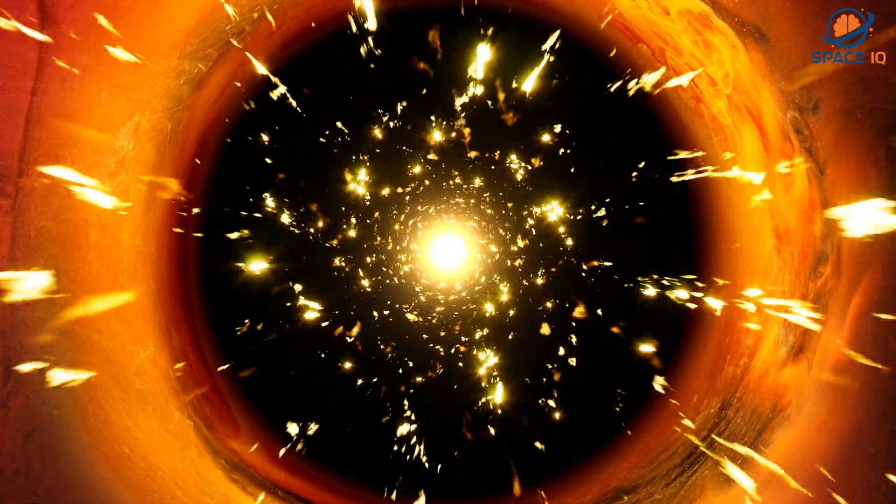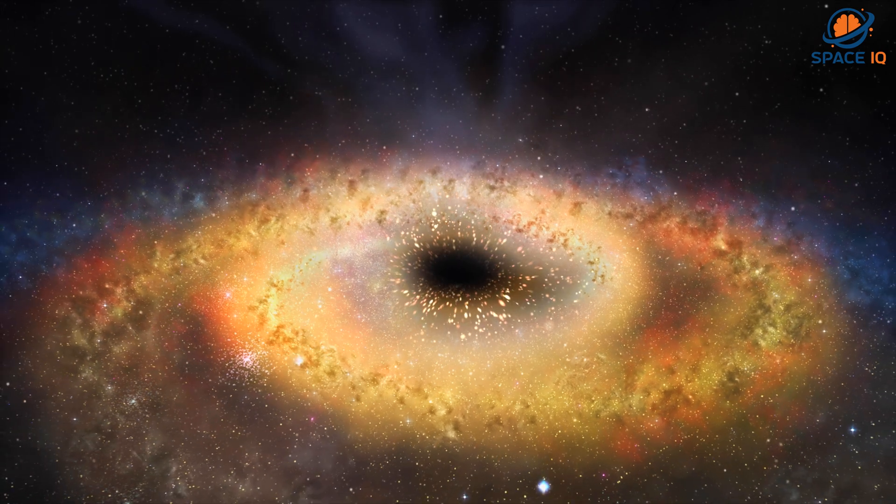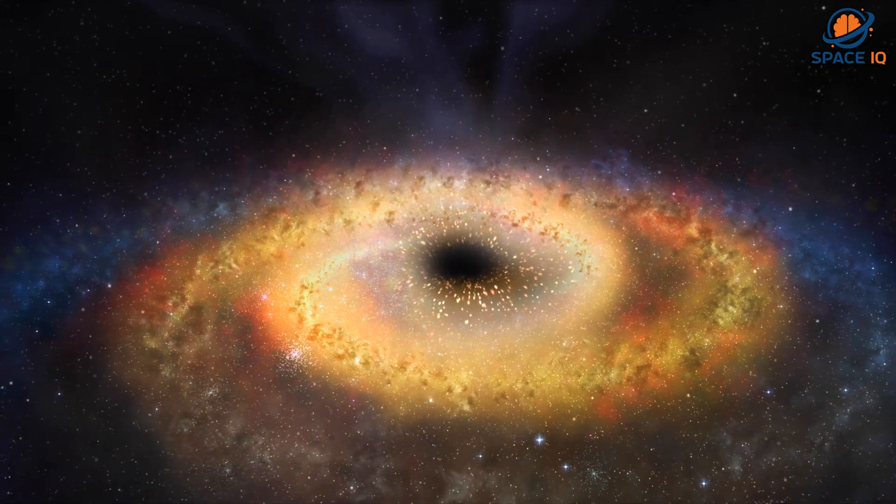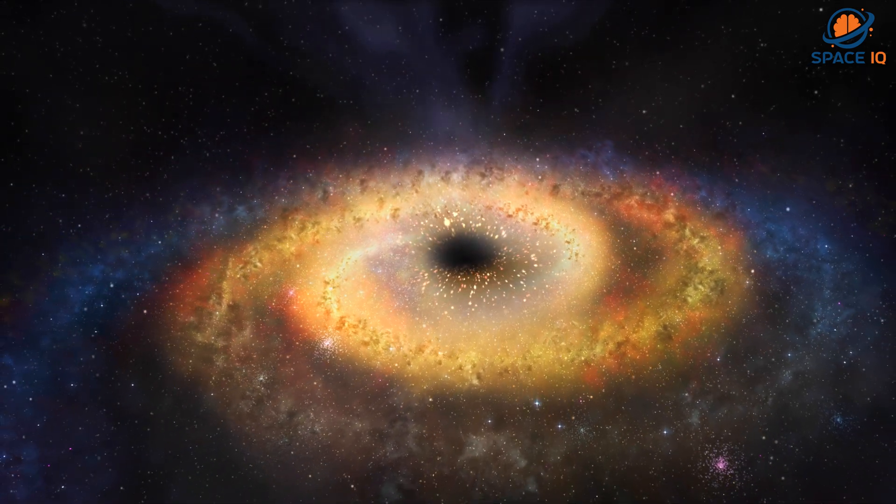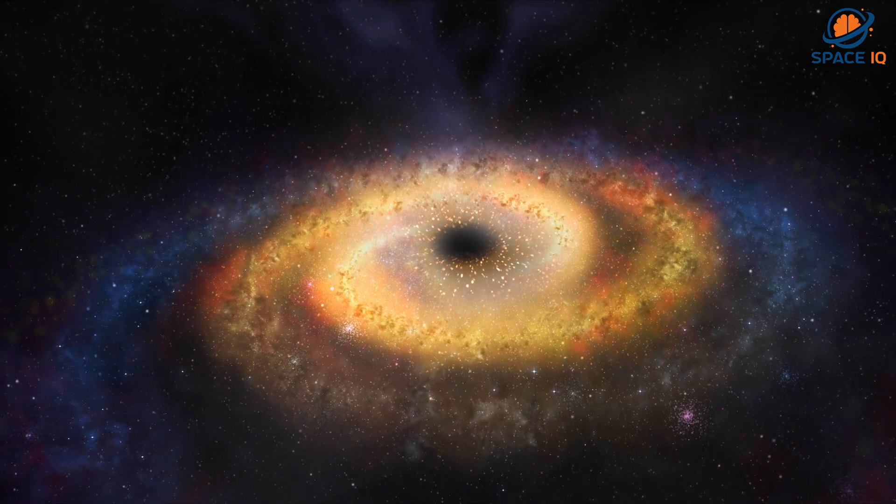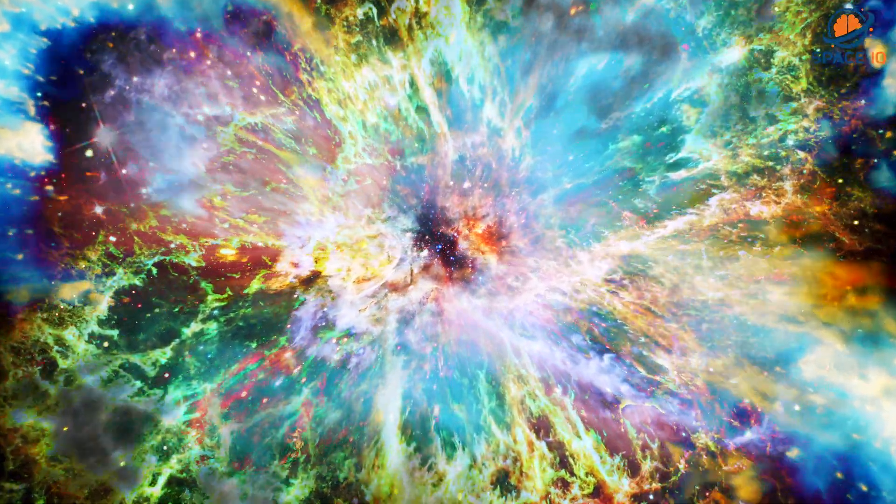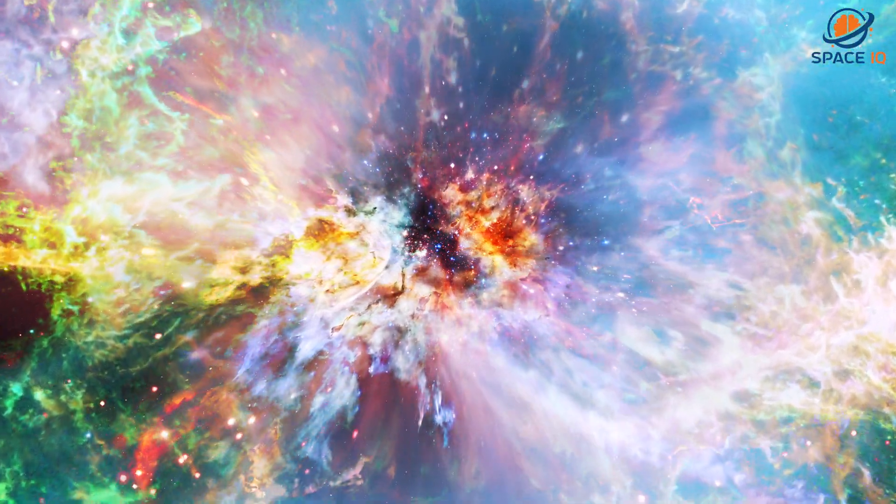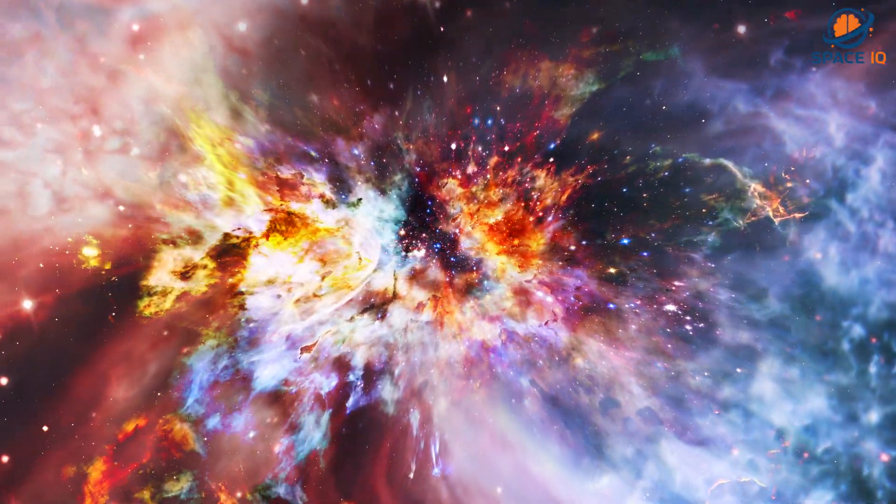Scientists have found proof that every large galaxy contains a supermassive black hole at its center. The supermassive black hole at the center of the Milky Way galaxy is called Sagittarius A. It has a mass equal to about 4 million suns and would fit inside a very large ball that could hold a few million Earths.